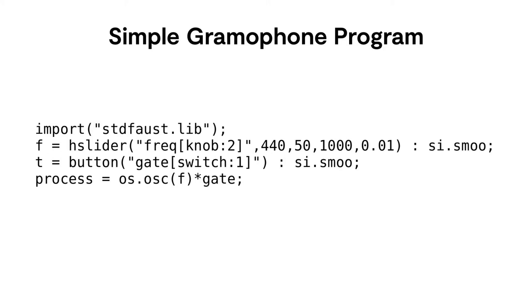A gramophone program can be as simple as this. In that case, the frequency of a sine wave oscillator is controlled by the rotary potentiometer of the gramophone and sound can be triggered by pressing the button under the middle finger. In other words, any Faust parameter can be mapped to a gramophone controller using a metadata. Standard Faust motion sensor metadata like gyroscopes and accelerometers can be used to map the 9 degrees of freedom sensor of the gramophone to Faust parameters. An exhaustive list of the gramophone Faust metadata can be found on the Amstromgram website. The gramophone can also be controlled using MIDI over Bluetooth.